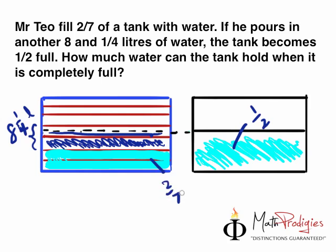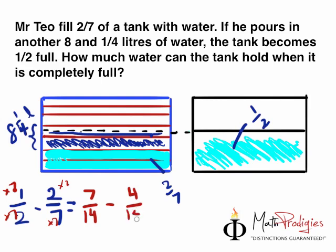So the question is, how much water can the tank hold when it is completely full? So first off, we need to understand how many units equals to 8 and 1/4. So how do you do this? You take this amount, which is half right now, minus this amount, which is 2 over 7. So let's do the working right now. 1/2 minus 2/7. Now Primary 5 Prodigies, how do we do something like this? All we have to do is multiply the bottoms to make it look the same. So times 7 here, times 7 here, you get 7/14. And you times 2 here, because we want to make it look the same, times 2 on top, equals to 4/14, which equals to 3/14.